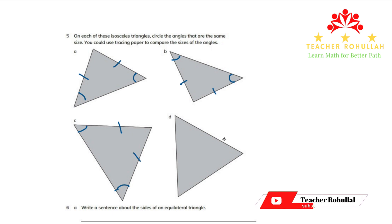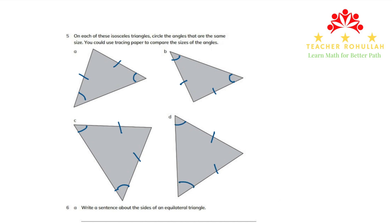The same way in triangle C, this side is equal to this side, so the equal angles are here and down here. In triangle D, these two are the equal sides, so the equal angles are here and here. You can use tracing paper to find the equal-sized angles in your book, because you can use pencil and ruler over there.